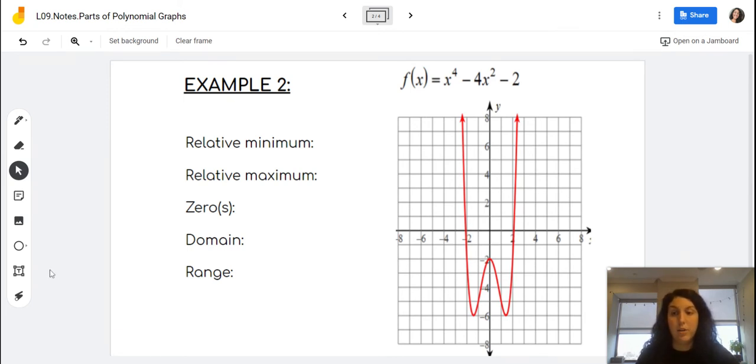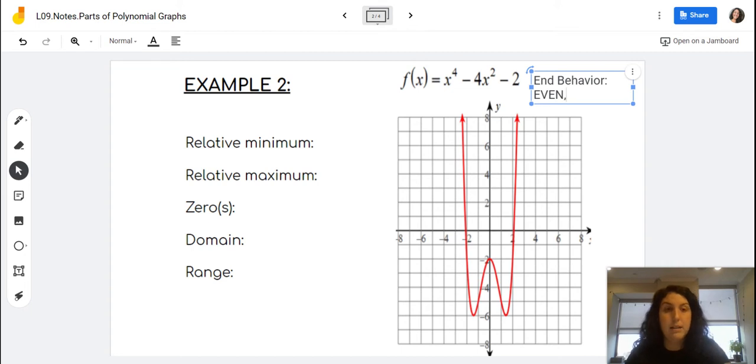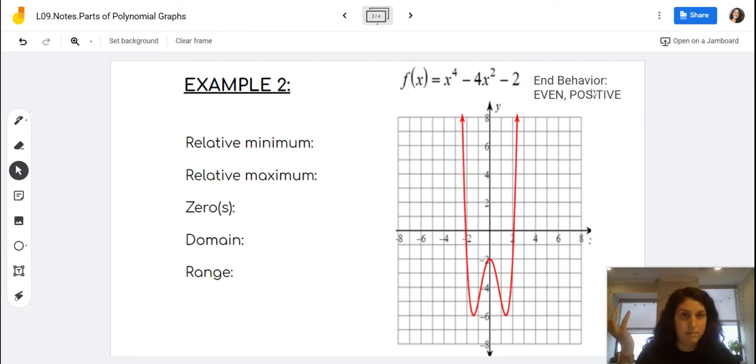Just another reminder that my end behavior for this is even because my highest degree is 4, an even number, and positive because the number in front is a positive one. That'll help us next week, so I just want to make sure we're remembering that.